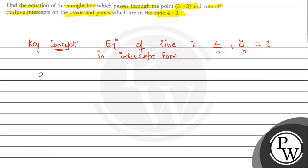First of all, passing point given is (3, -2). Given: cuts of positive intercepts on x-axis and y-axis which are in ratio 4:3. According to the equation, let us suppose the ratio is a:b. So, a/b = 4/3. From here, a = (4/3)b — the value of a in terms of b.